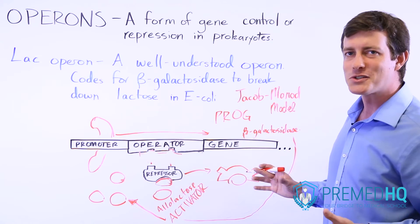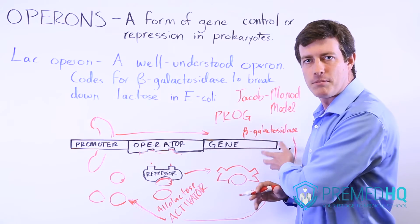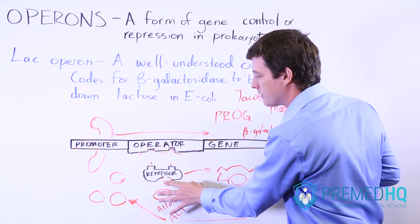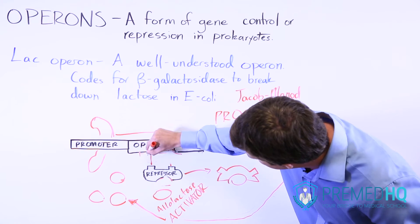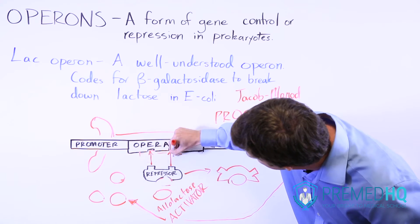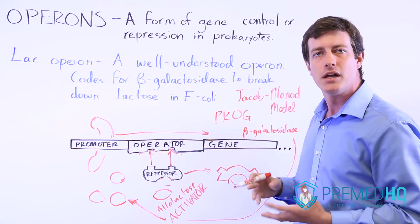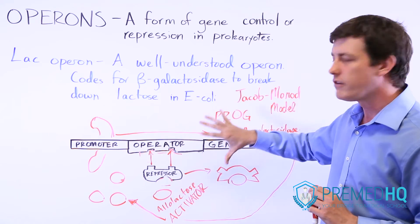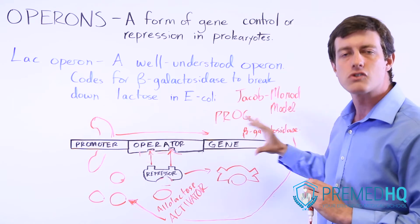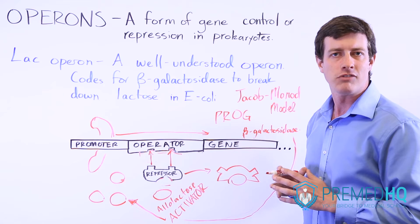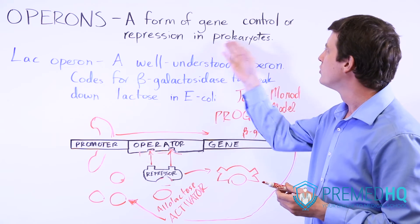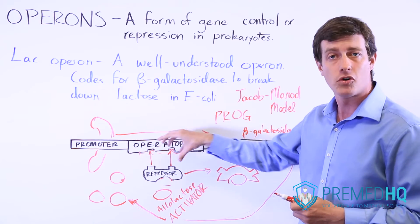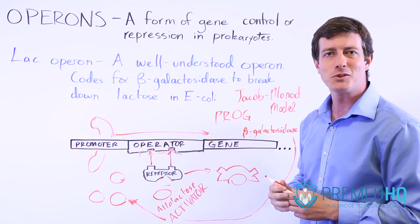When the lactose is there, you're making the enzyme. When it's not there, the repressor is in its original form blocking transcription because you don't need to transcribe that gene. Operons are a prokaryotic form of gene control, but because of their straightforwardness, they're something you'll encounter frequently.